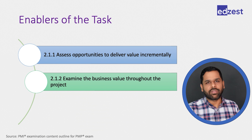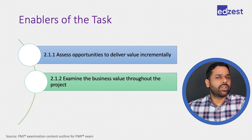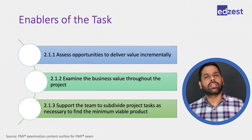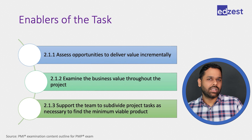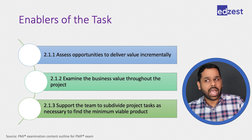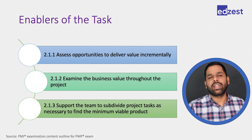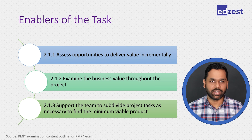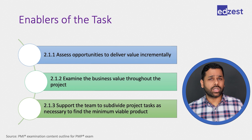The second enabler is examining the business value throughout the project — checking whether we are moving in the right direction and actually delivering value. The third enabler is to support the team so they can subdivide project tasks, create MVPs, create prototypes, and understand what kind of value they can deliver with minimum effort. With minimum effort, they should confirm they are moving in the right direction.